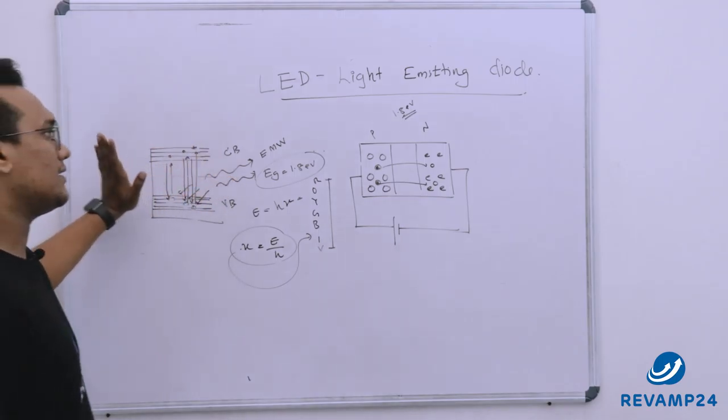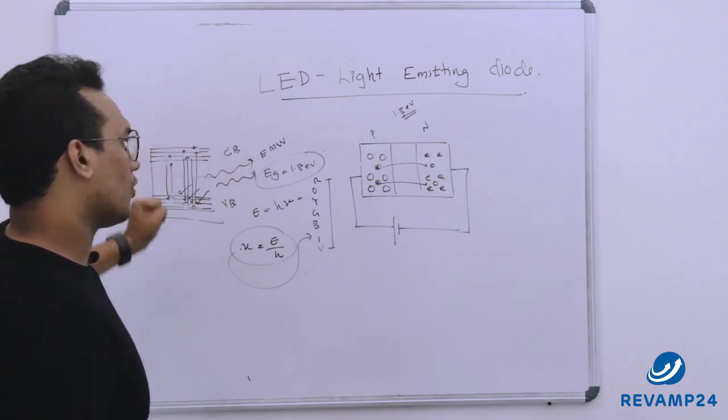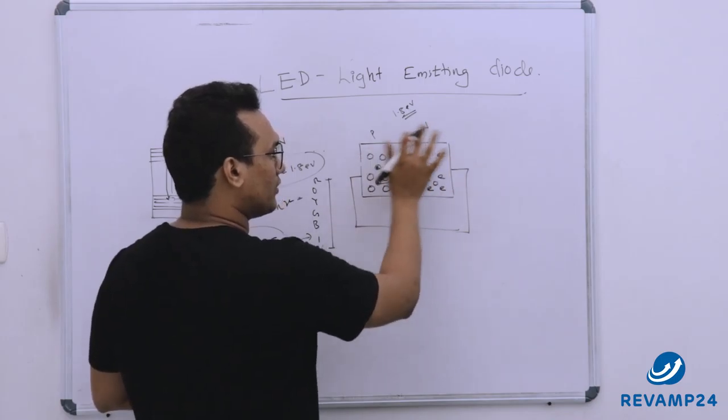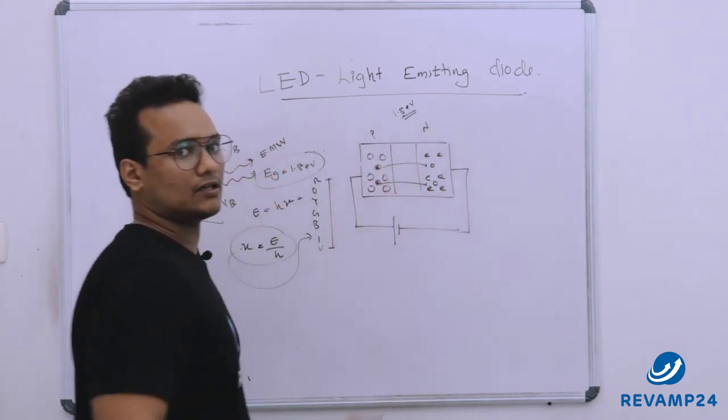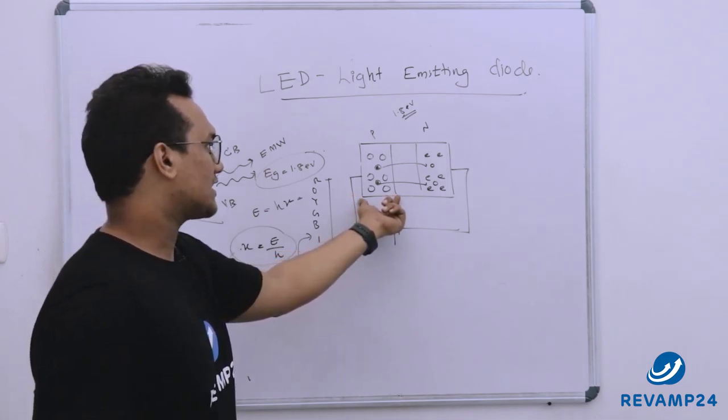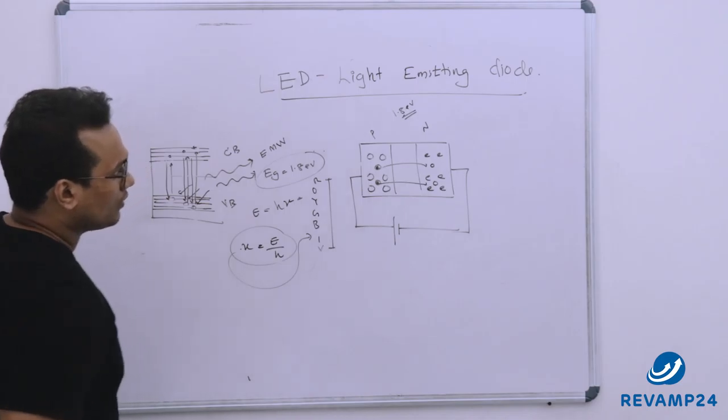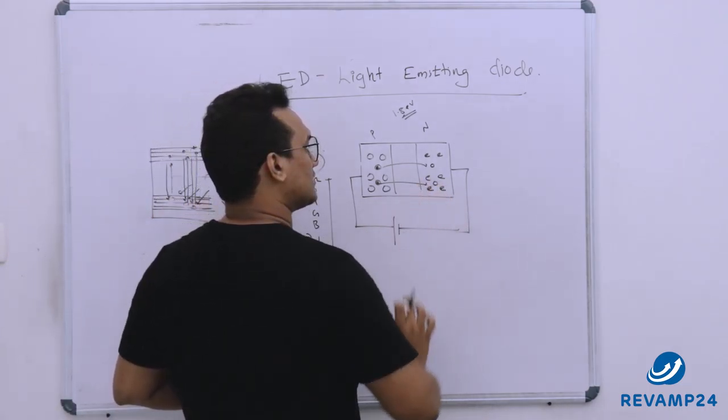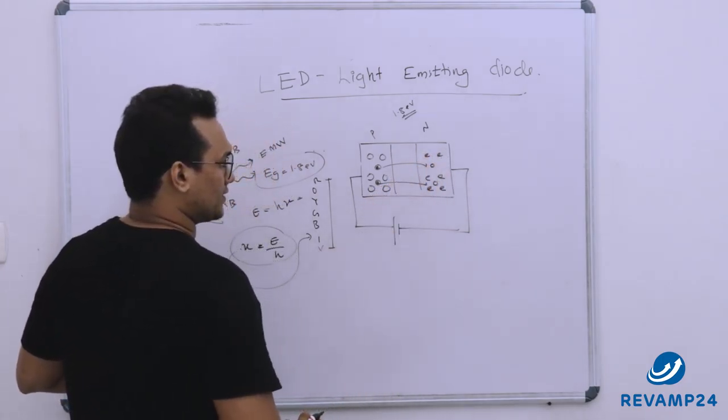Here in this case that would be in visible spectra. So we need thermally generated electron hole pairs and thermally generated electron hole pairs are nothing but the minority charge carriers. Majority charge carriers are due to acceptors and donors. Here in this case acceptors here in this case donors. Here in this case due to trivalent impurity. Here in this case due to pentavalent impurities.